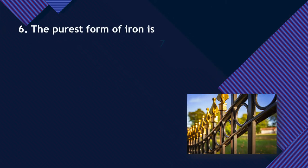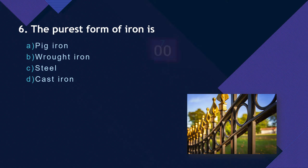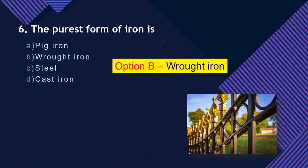Question 6: What is the purest form of iron? Option A: Pig iron. Option B: Wrought iron. Option C: Steel. Option D: Cast iron. The purest form of iron is wrought iron. Purity means that impurities like sulfur, phosphorus, and manganese have been removed, leaving mostly Fe. By removing impurities from cast iron, we obtain wrought iron.